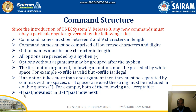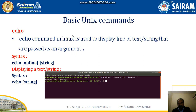If an option takes more than one argument, they must be separated by commas with no spaces, or if spaces are used, the string must be included in double quotes. For example: '-f past,now,next' with commas, or '-f "past now next"' enclosed in double quotes. This is the standard structure of commands which must be followed by any command in Unix.